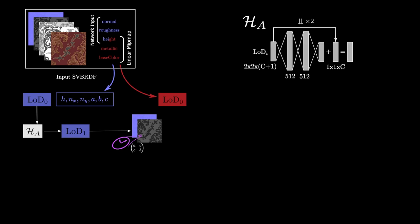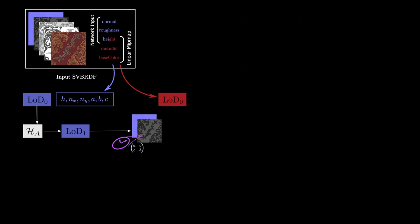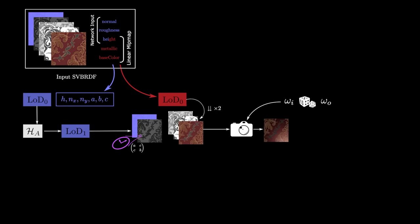The metallic, base color and height are linearly downsampled and the bundle is used to produce the first level of detail provided for rendering under random light and view directions.